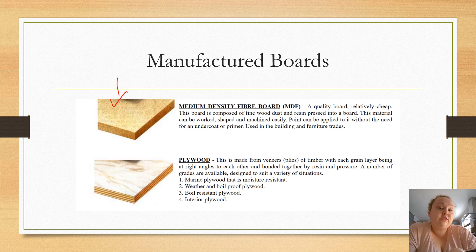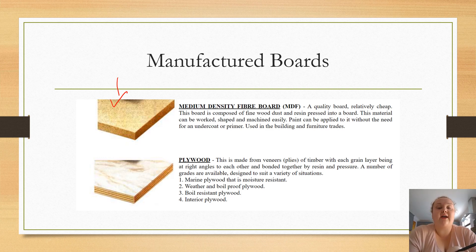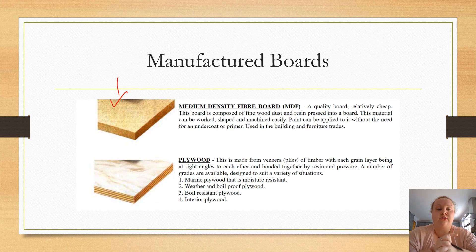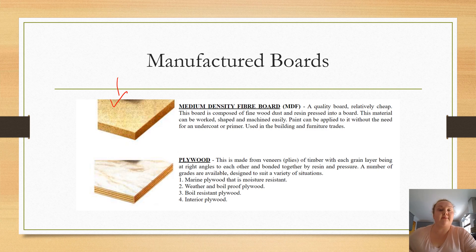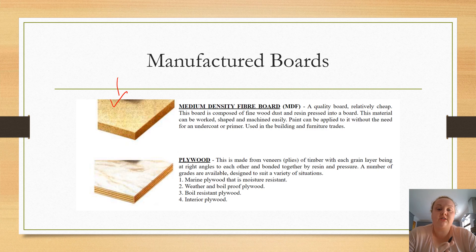Next we have MDF — Medium Density Fibreboard — which is also used a lot in kitchens. It's relatively cheap, compressed, and made up of finer pieces of wood. Like chipboard it mixes with resin and is compressed into a board, but MDF uses fibres rather than chips, which makes it a lot smoother. This material can be worked, shaped, and machined easily, and it can be painted, veneered, and finished in many different ways.